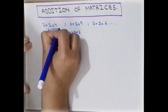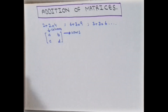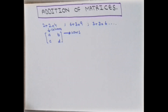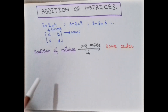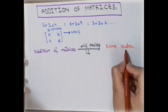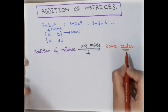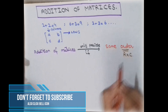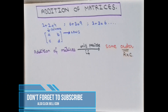If we need to add two matrices, there is a rule: two matrices can be added only if they are of the same order. The order means rows by columns. Always remember, the order of both matrices must be the same.